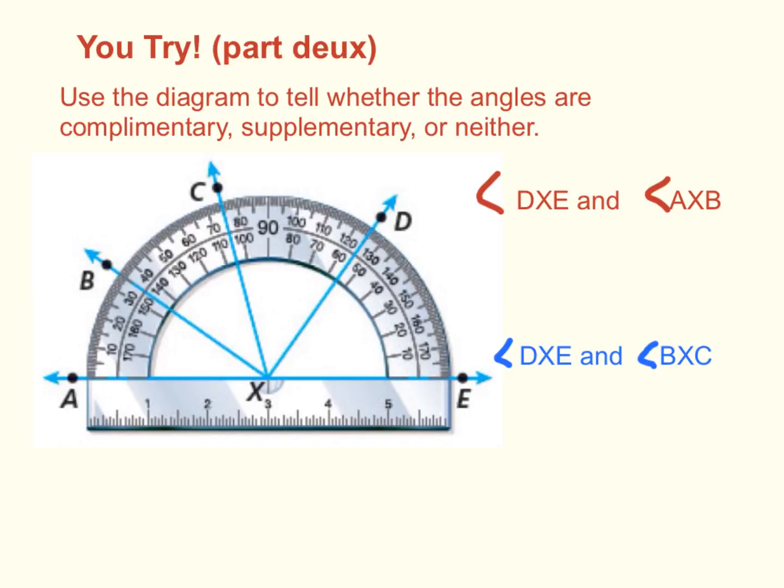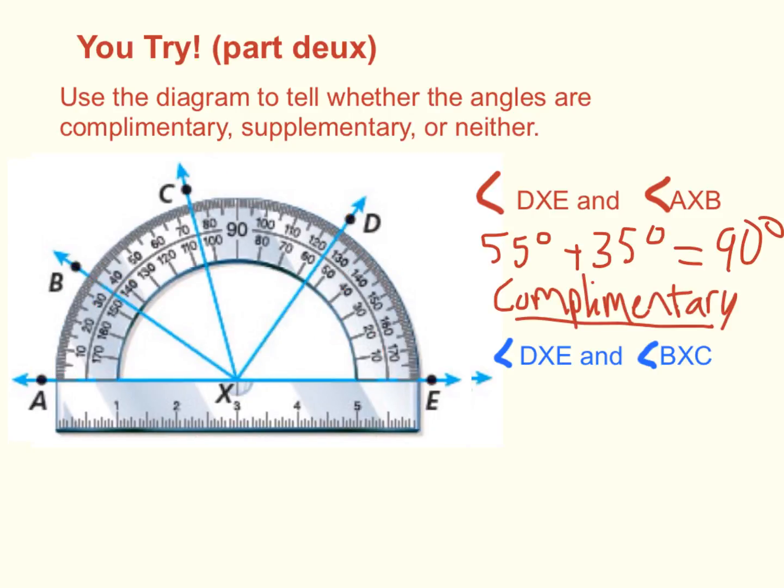So, first, let's take a look at angle DXE. If we measure that on the protractor, we get about 55 degrees. Now, if we look at angle AXB, use the outside of the protractor, we get 35. If we add these up, we get 90 degrees. Are they complementary, supplementary, or neither? Well, they are complementary.